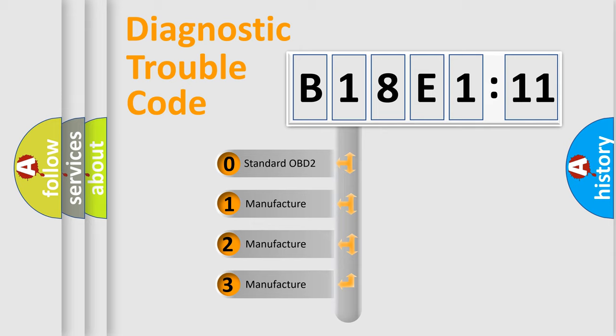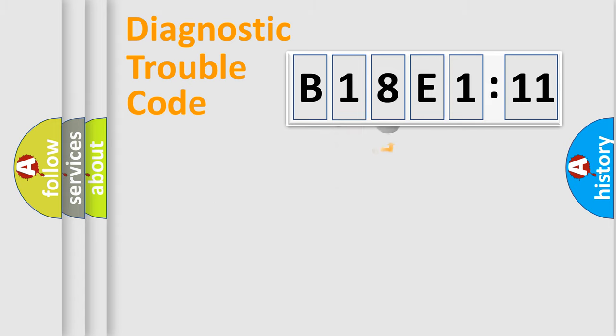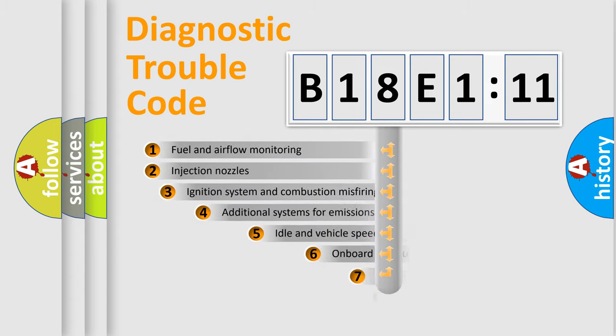If the second character is expressed as zero, it is a standardized error. In the case of numbers 1, 2, or 3, it is a more prestigious expression of the car-specific error.